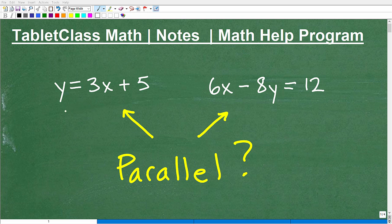Okay, so we have two lines here, or two linear equations to be more precise. So I got y equals 3x plus 5, and then I have 6x minus 8y is equal to 12. Now, I could graph both of these, and this is kind of basic algebra.